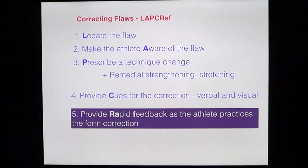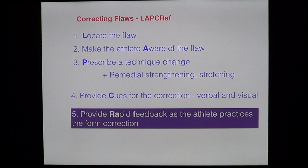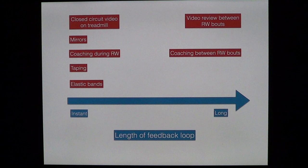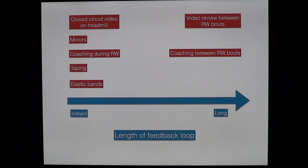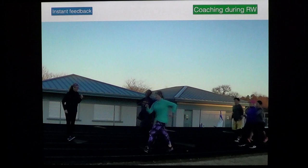Rapid feedback to the athlete really helps form correction. You can think of the feedback loop as how quickly they get the information that they're doing it right or wrong. This can be done with a closed-circuit video on a treadmill or mirrors where you can give verbal instructions. We can also use elastic tape or elastic bands to give them proprioceptive feedback on body position. Longer feedback loops are less useful and could consist of video review between bursts of race walking or coaching between bursts.